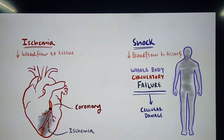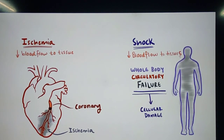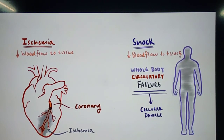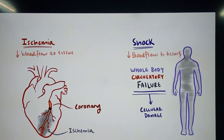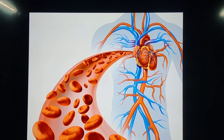Shock is a failure of the circulatory system to supply sufficient blood to the peripheral tissues to meet the basic metabolic requirements for oxygen and nutrients, and involves the incomplete removal of metabolic waste from the affected tissues. So shock is a state which arises when there is insufficient blood flow to the tissues of the body.